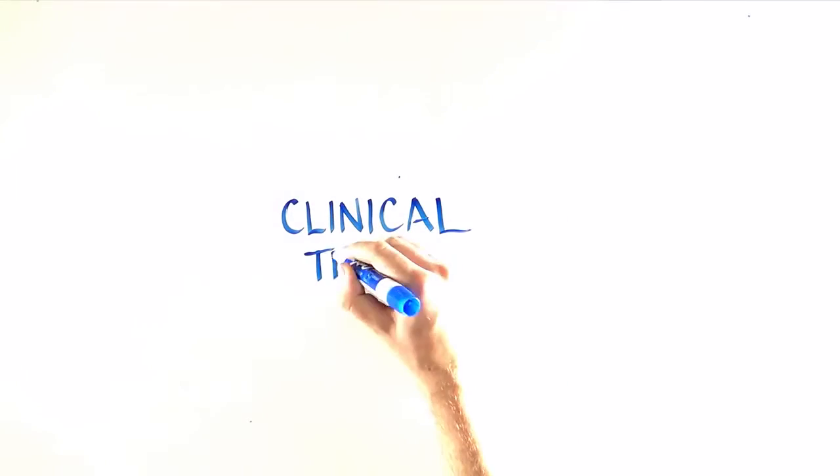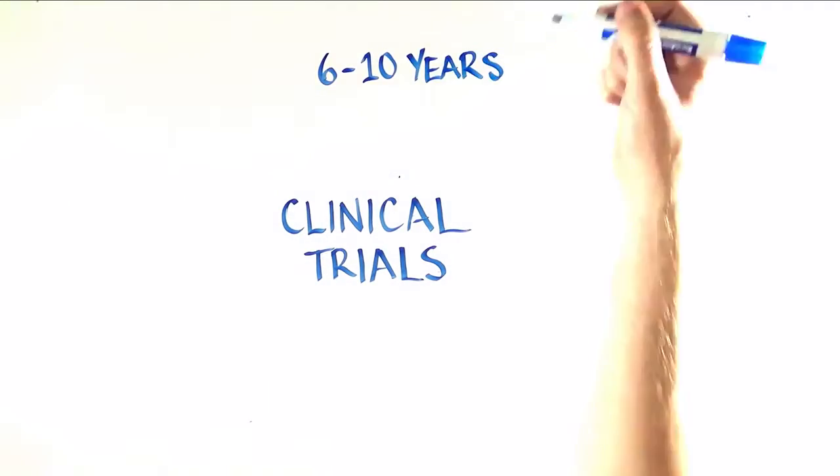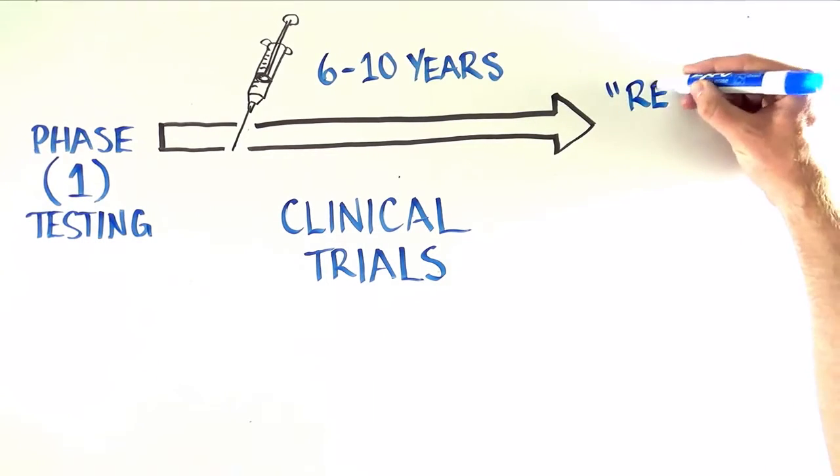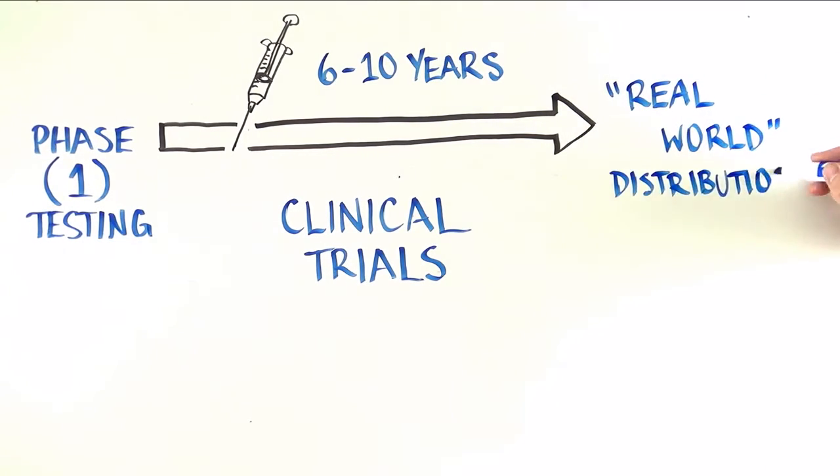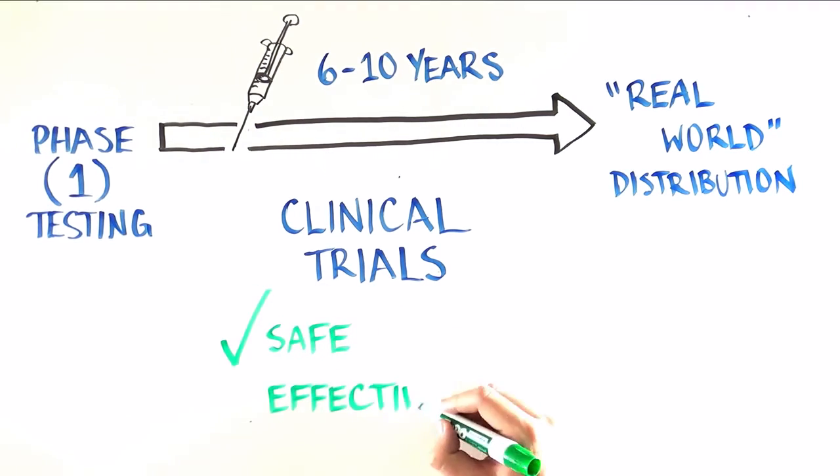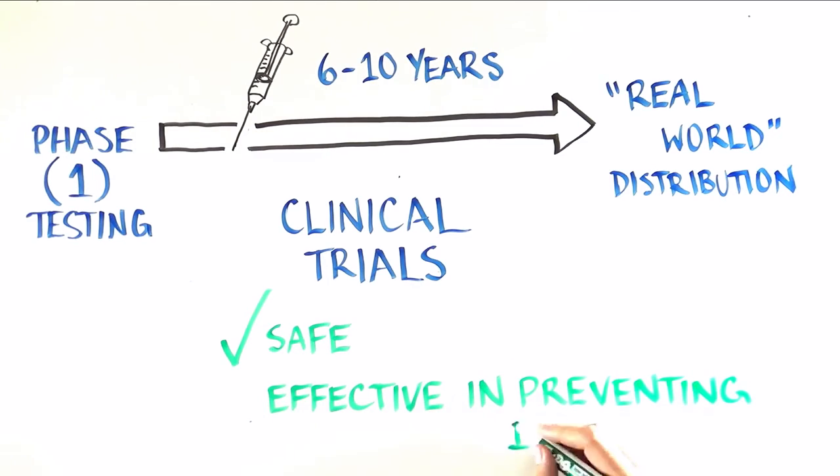In the best-case scenario, it could take 6 to 10 years for a promising vaccine to move from phase 1 testing to real-world distribution. Often it takes longer. But clinical trials are absolutely necessary to determine that a vaccine is safe and effective in preventing new infections.